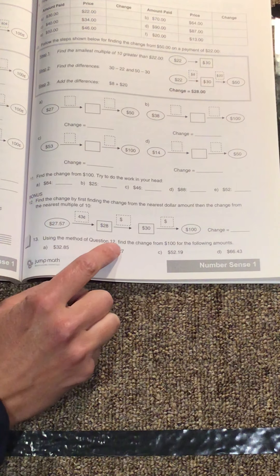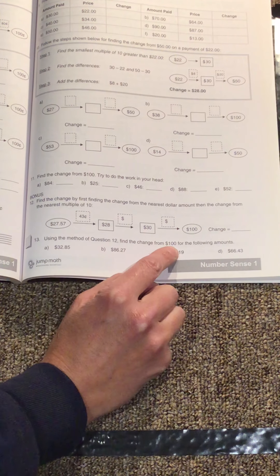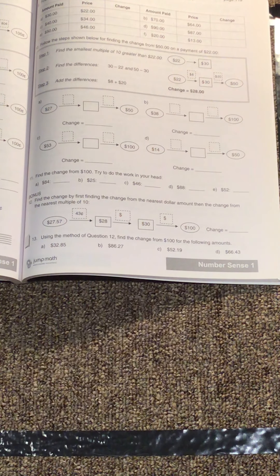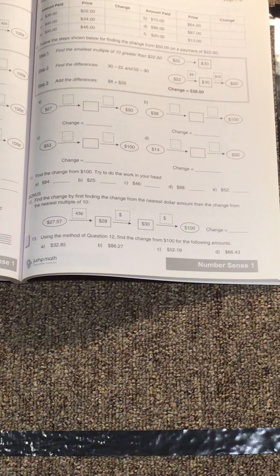Using the method of question 12, find the change from $100 for the following amounts. All right, that's it. If you have any questions, let me know.